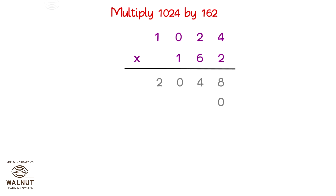We write a zero in the units place and multiply by 6. Six fours are 24. We write the 4 in the tens place and add the carryover to 2. Six twos are 12 plus 2 which were the carryover is equal to 14. We write the 4 in the hundreds place and add the carryover to 0. Six zeros are 0 plus 1 which was the carryover is equal to 1. Six ones are 6.